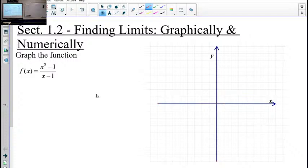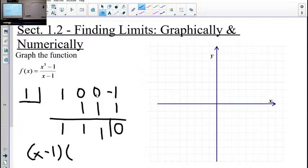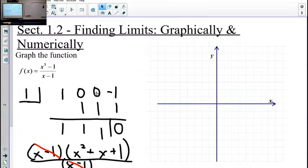Graph the function. X squared plus, these are coefficients if you don't know, coefficients of the terms, so plus X plus 1. We sort of cancel, we'll talk about that canceling in just a second, but that tells us it looks exactly like X squared plus X plus 1, except at 1. We'll talk about 1 in just a second. But to graph it, we just need to know what the graph of X squared plus X plus 1 looks like.